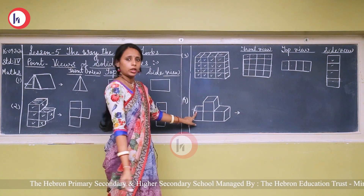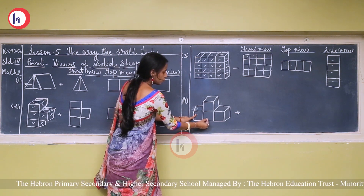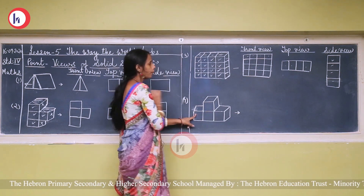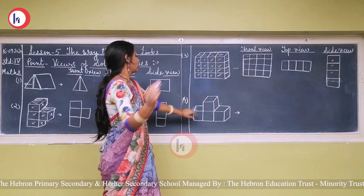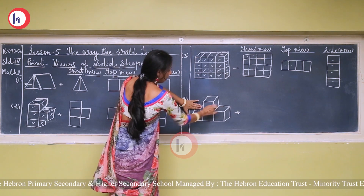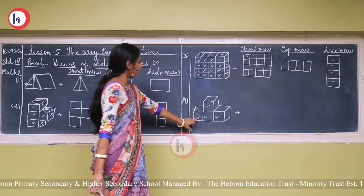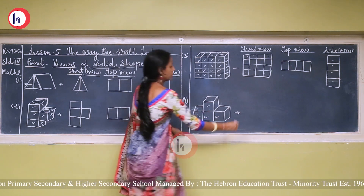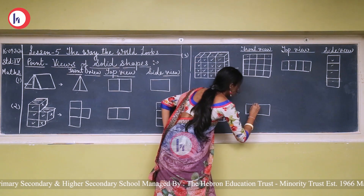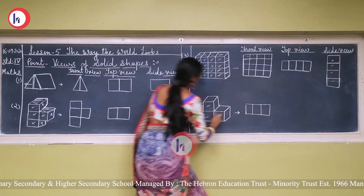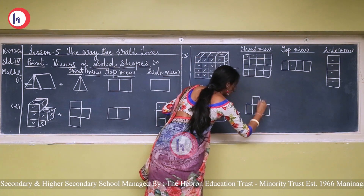Now at the last here is a solid shape. See how many cubes are there — 1, 2, 3, and 4. For the front view, whenever you see from the front, look at the front part only: 1, 2, 3, 4 — four squares. So first draw 3 squares and 1 square on top: 1, 2, 3, and 4.